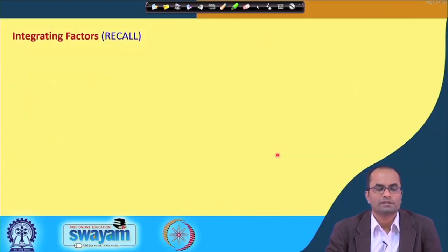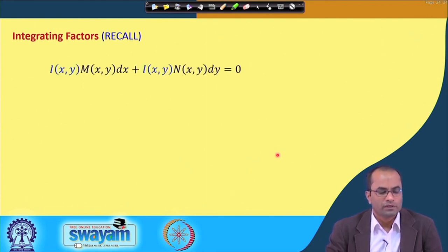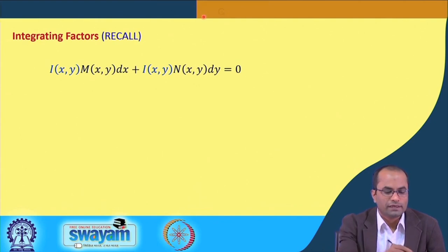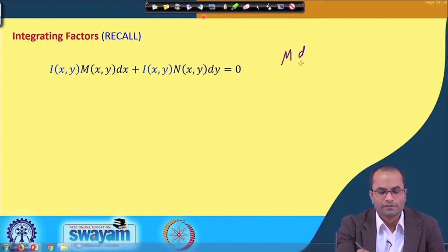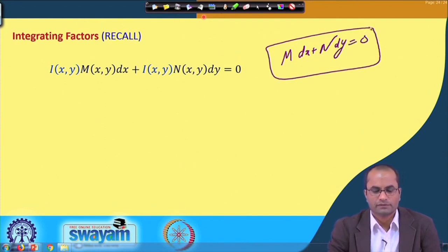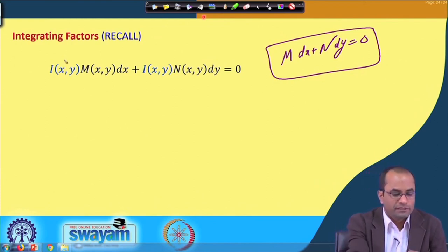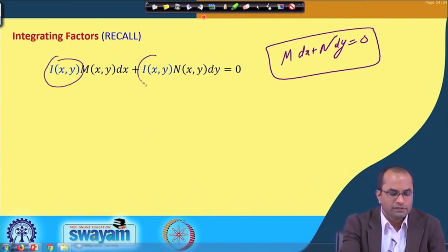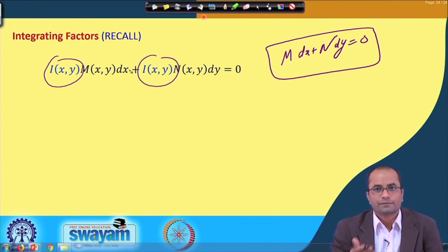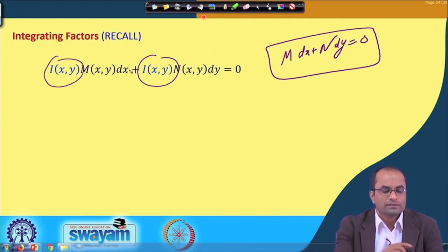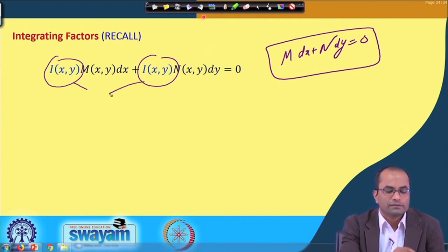Just to recall from the previous lecture where we discussed integrating factors: if our equation is given as M dx, where M is a function of x and y, and N is also a function of x and y, and this given differential equation is not exact, and if we multiply that equation by a function μ(x,y) and then it becomes exact, then we call such a function the integrating factor.